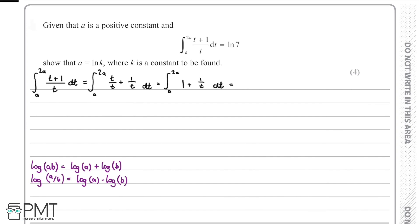We can now carry out the integration. We know that 1 integrated with respect to t is t, and 1/t integrates to ln(t). We put square brackets around these and write our limits, showing we have integrated and now just need to substitute the limits in.